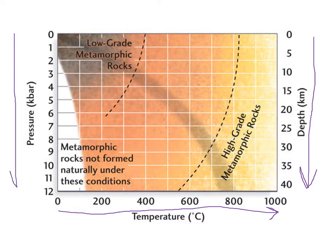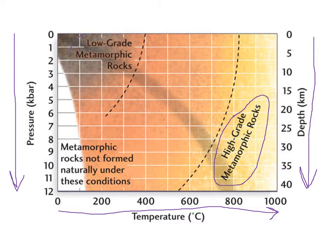As we go down in depth, there's more rock overlying any given point, so the pressure increases as well. The deeper in the earth you go, the hotter and the more pressure those rocks are under, so they're more deformed and more highly altered. Rocks that are pushed down very deep where it's hot with lots of pressure are called high-grade metamorphic rocks because they're highly altered from their original rock. If pushed down somewhat but not quite as deep, we call those low-grade metamorphic rocks because they're not as highly altered.